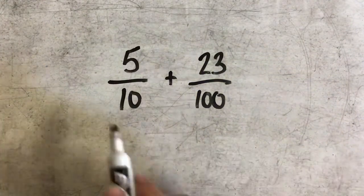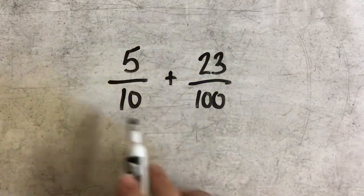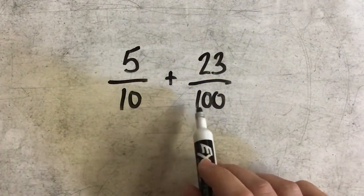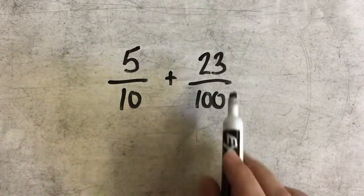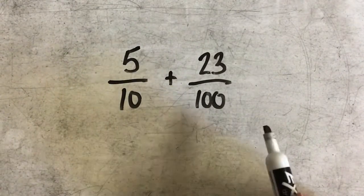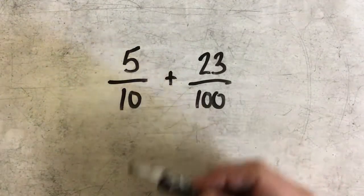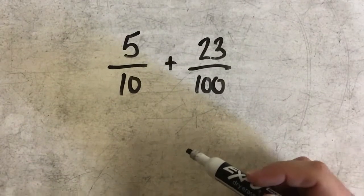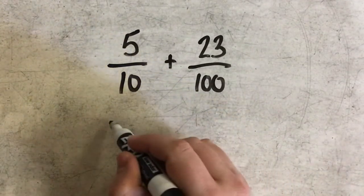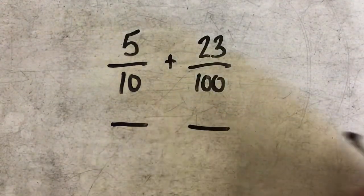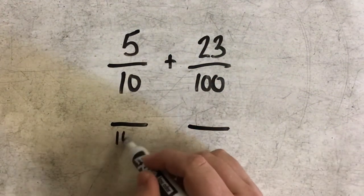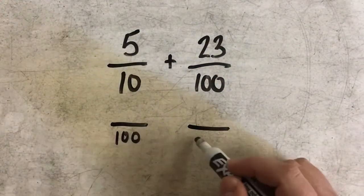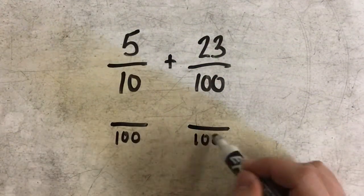The easiest way to change these is to change them both from tenths to hundredths. So I'm going to rewrite the problem down below, this time writing them with common denominators — the same denominator — and we want that denominator to be 100.